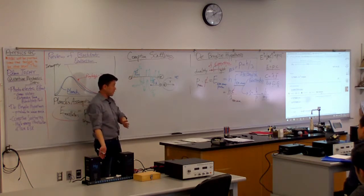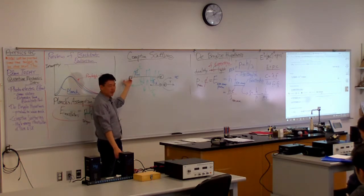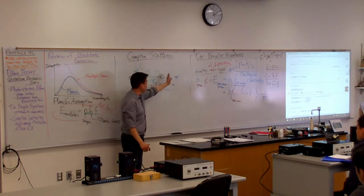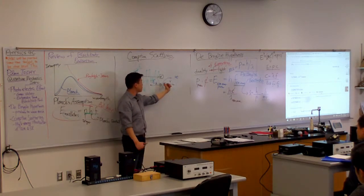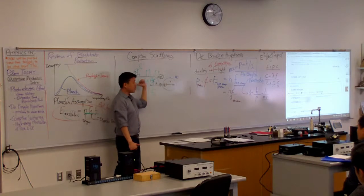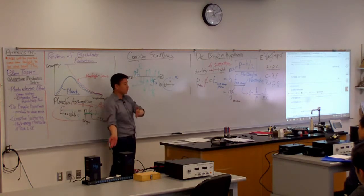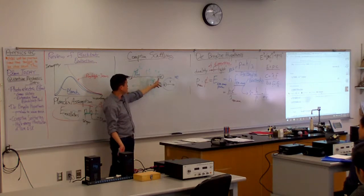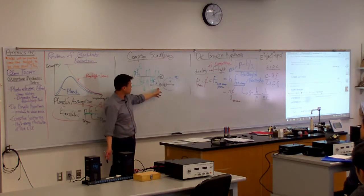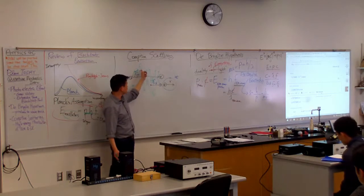Because when people do the experiment, it's usually with x-rays or gamma rays. Shine it, have it collide with the electron, and measure the energy of the light that's coming back or the frequency, wavelength of the light coming back. The wavelength changes in the collision.